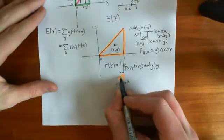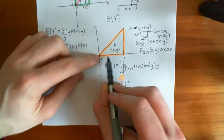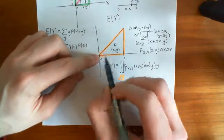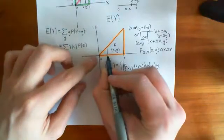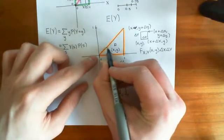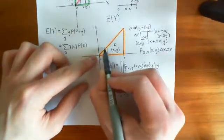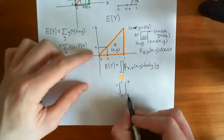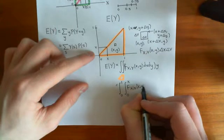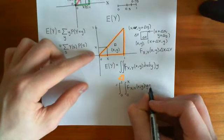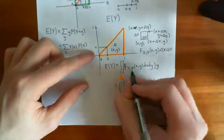All I've done is replace the integral over the orange triangle with actual limits. We integrate X from 0 to 1, and for each X we integrate Y from 0 to X — because if this is the line Y equals X, then the upper limit for Y is equal to the X value. Inside we have the probability density function evaluated at little x, little y, times Y, first integrating with respect to Y and then with respect to X. That is what this double integral means.